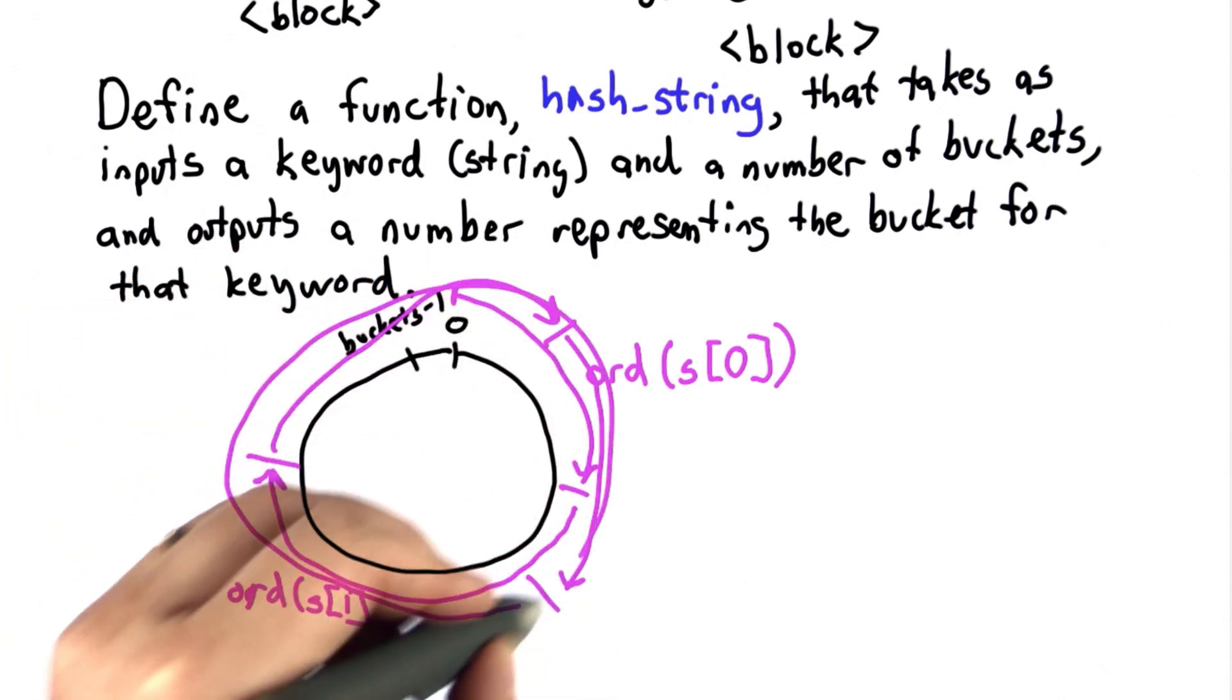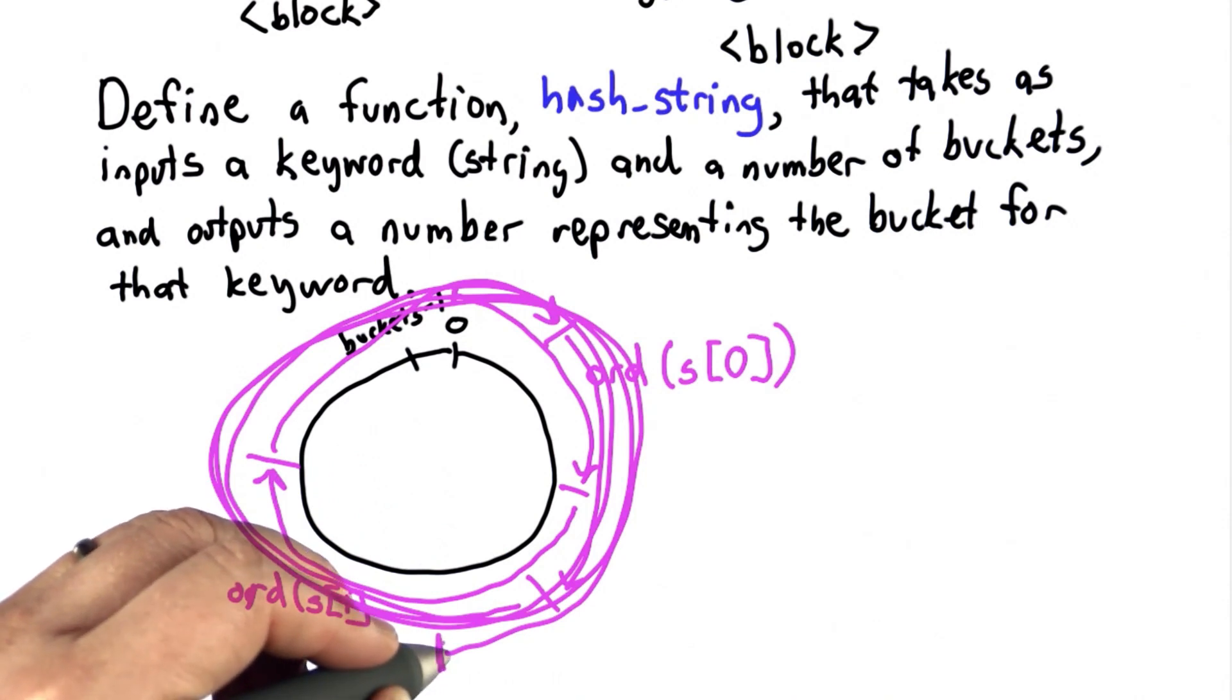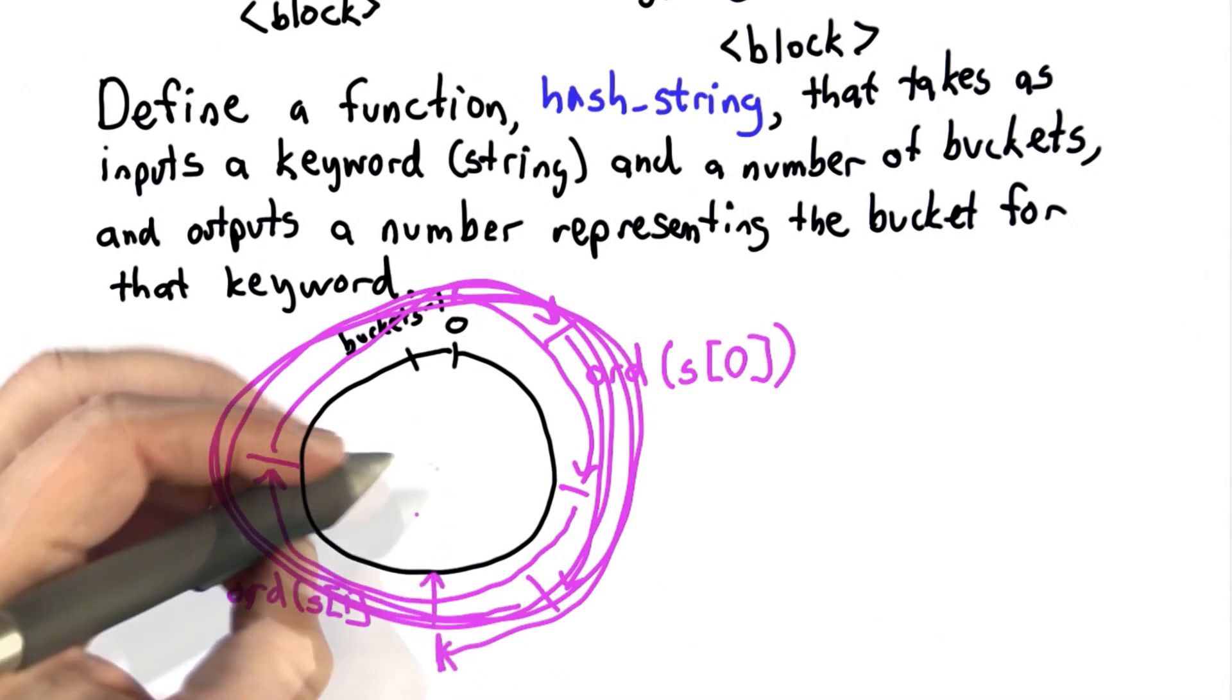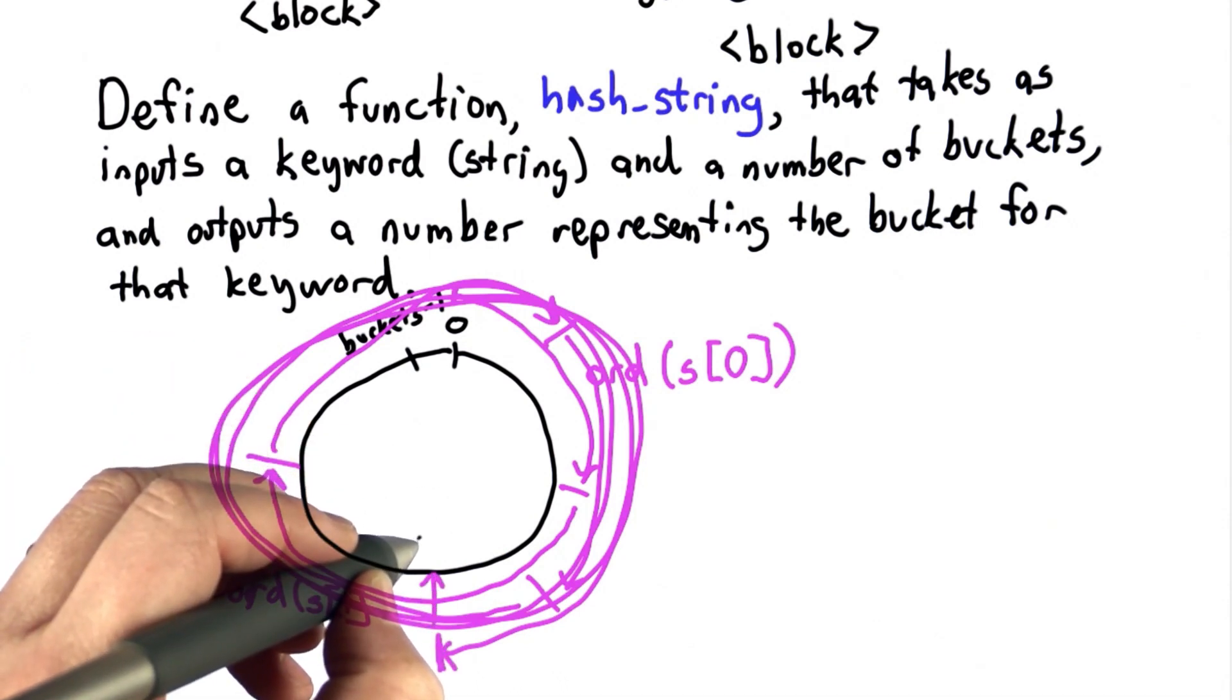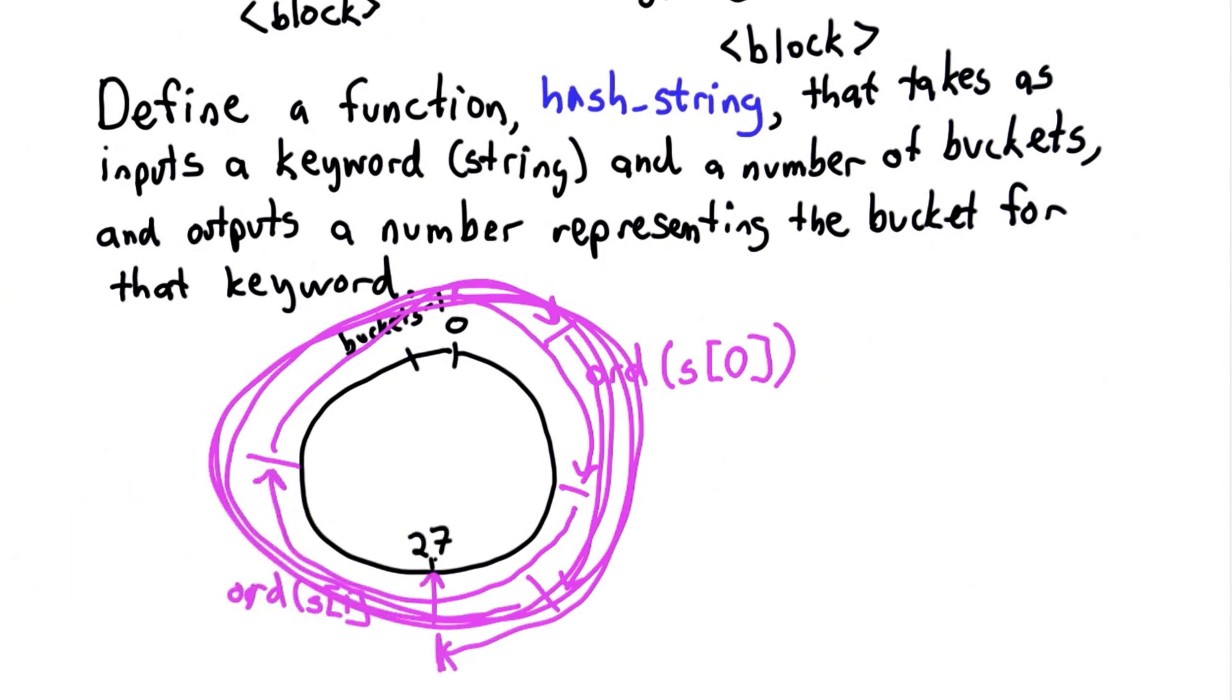As we keep going, we can go lots and lots of times if it's a big word. Wherever we end up is going to be the bucket that we use, let's say that's position 27. That's the idea.